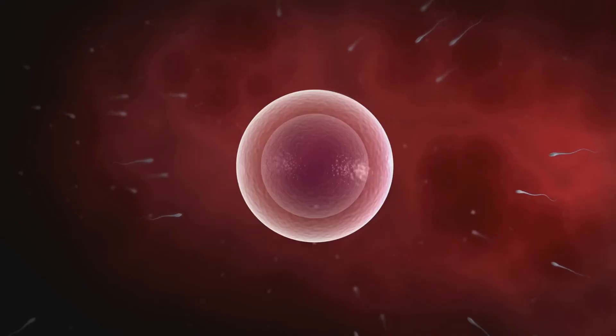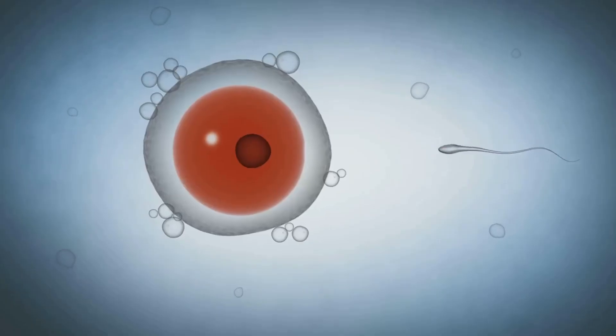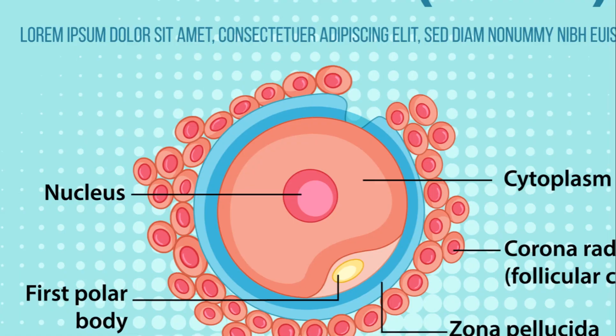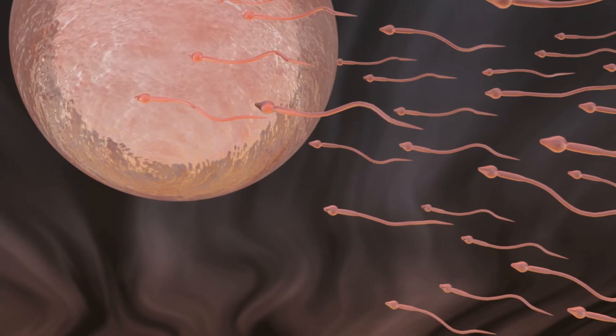Approximately 1 to 2 million oocytes are present at birth, yet only about 400 to 500 will be ovulated during her reproductive years. The oocyte is a diva - it takes nearly 14 days to mature before it's ready for its grand performance: ovulation.